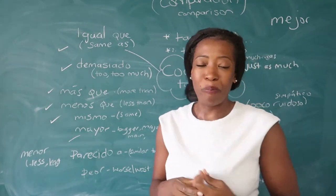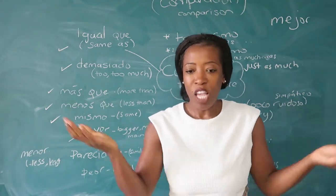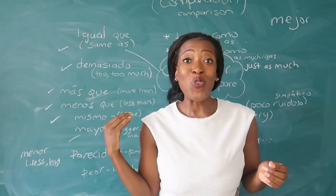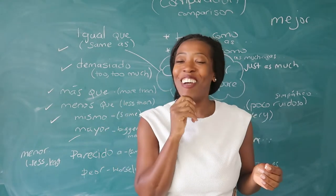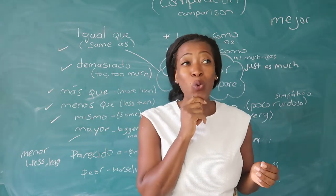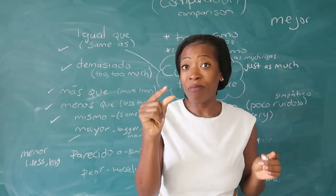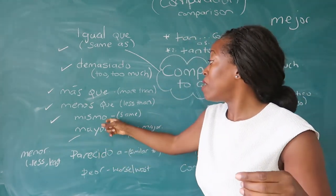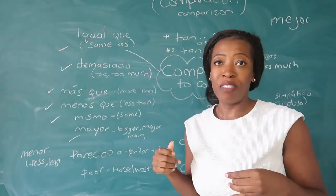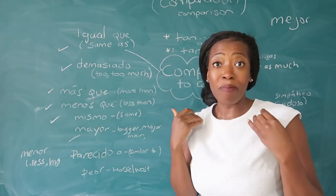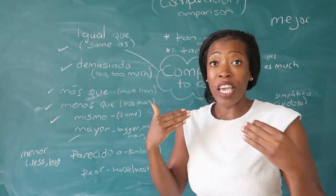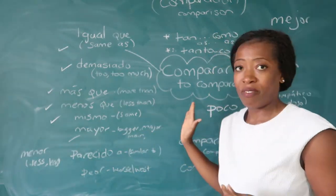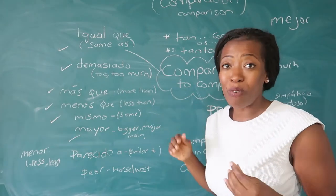Mismo means 'the same.' You might say: tu libro es el mismo que el mío — it's the same as mine. Es el mismo que yo — it's the same as me. El mismo — the same.